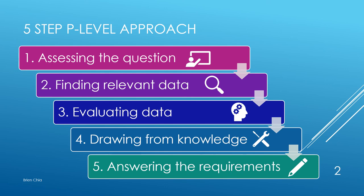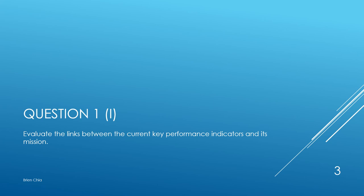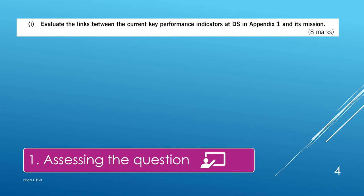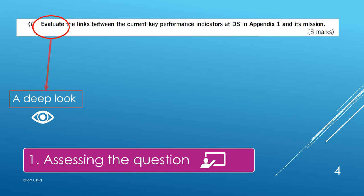This is very important so that you don't write out of point. We'll be looking at question one part i, which is to evaluate the links between the current key performance indicators and its mission. The first step is assessing the question. The question asks us to evaluate the links between the current key performance indicators at DS in appendix one and its mission. The first key word is evaluate, which means to take a deep look — it doesn't necessarily require making a judgment or decision.